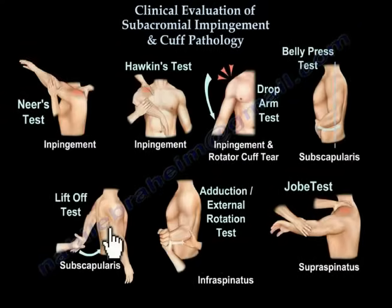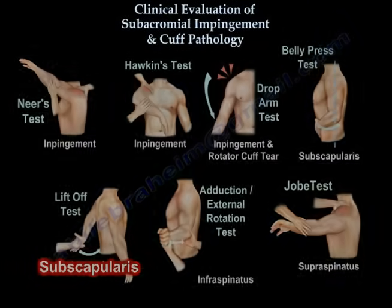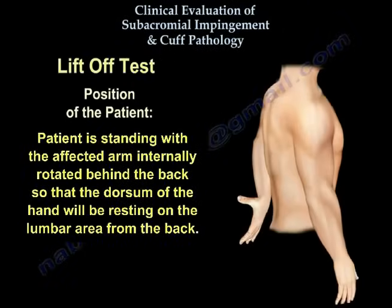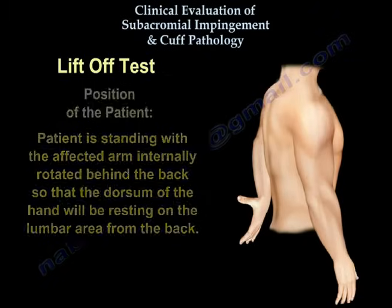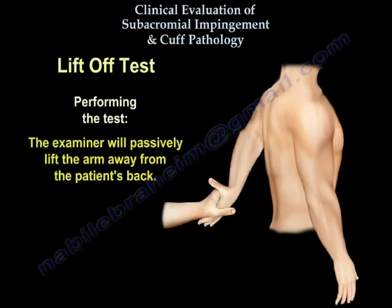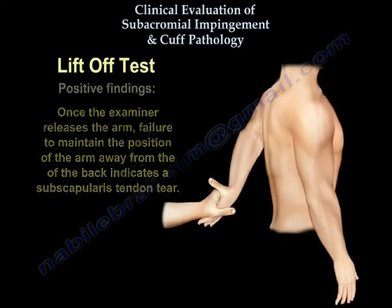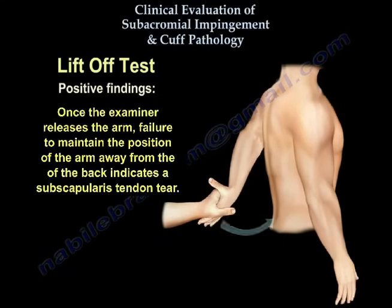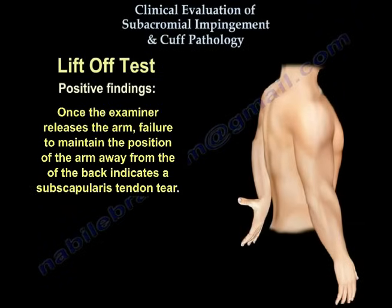Lift-off test for subscapularis integrity. The patient is standing with the affected arm internally rotated behind the back so that the dorsum of the hand will be resting on the lumbar area from the back. The examiner will passively lift the arm away from the patient's back. Once the examiner releases the arm, failure to maintain the position of the arm away from the back indicates a subscapularis tendon tear.